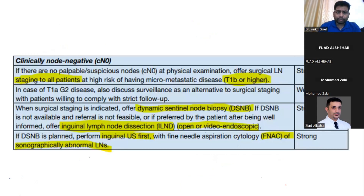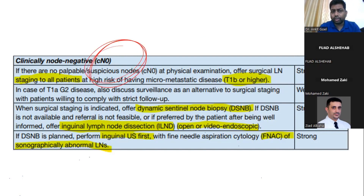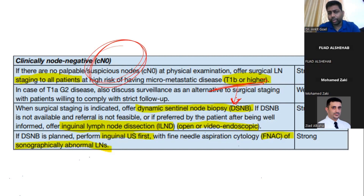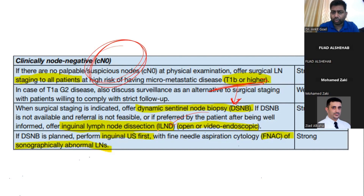The guidelines state that for clinical node negative with a T1b or higher tumor where there is no palpable node, the recommended approach is a dynamic sentinel lymph node biopsy — that is what the examiner is waiting to hear. If you don't have the facility for a dynamic sentinel lymph node biopsy, you go for a modified inguinal lymph node dissection. It is not a radical dissection; we remove some of the superficial nodes and the medial-most deep nodes.